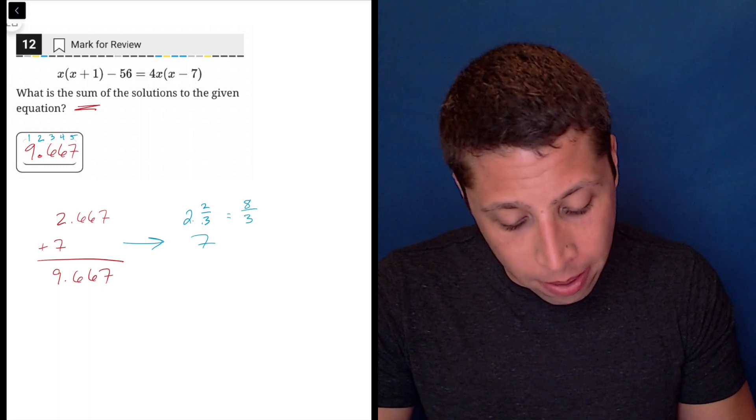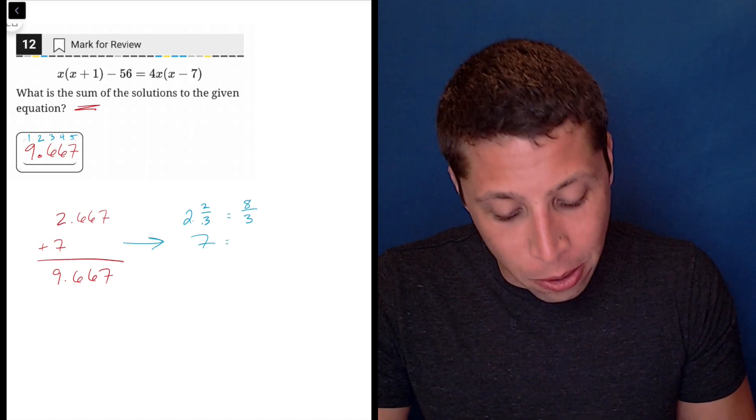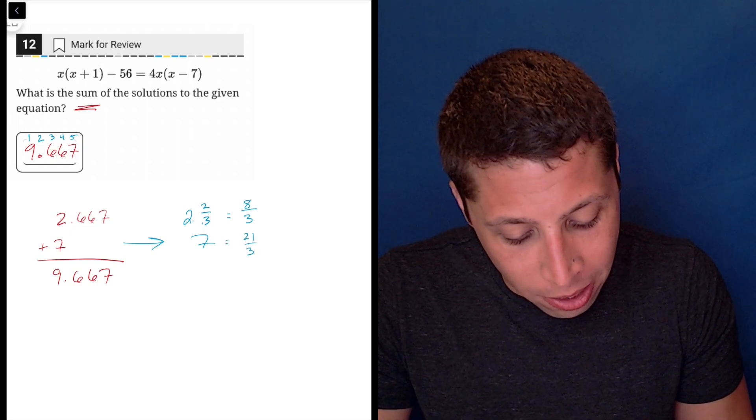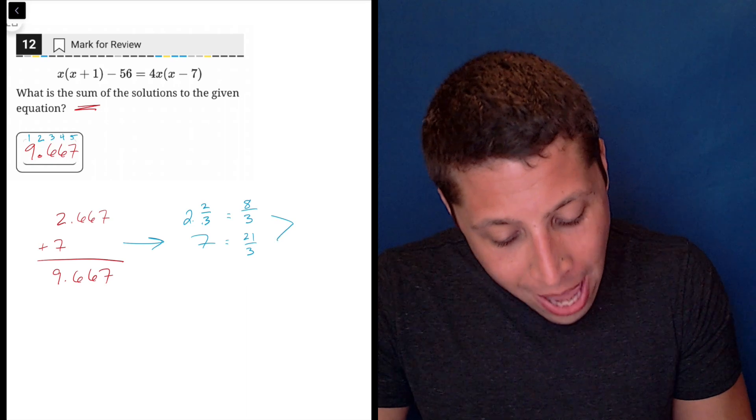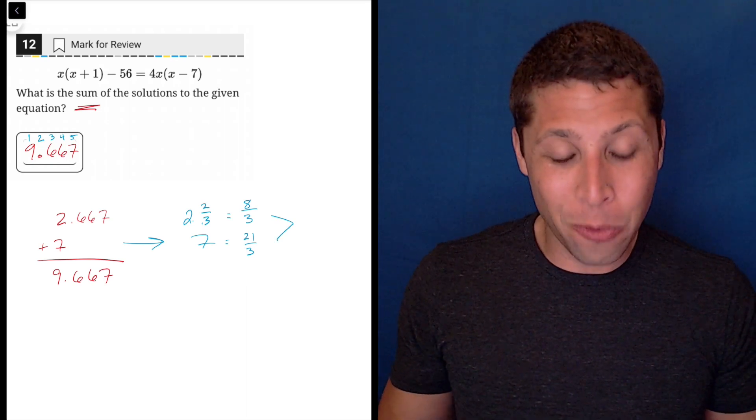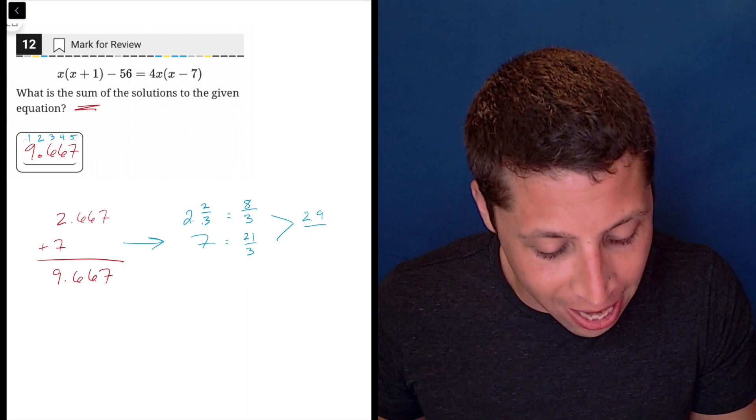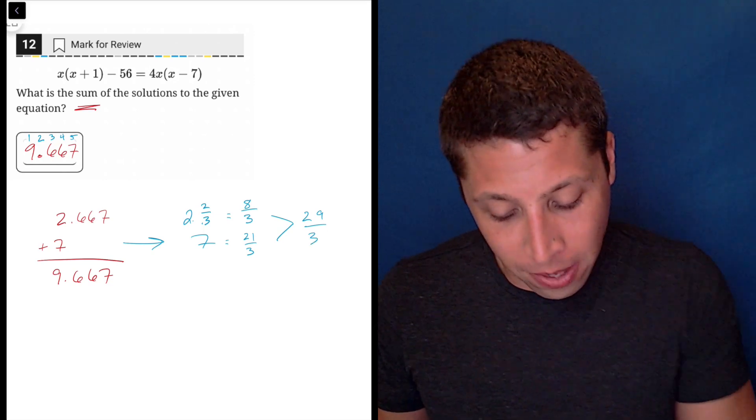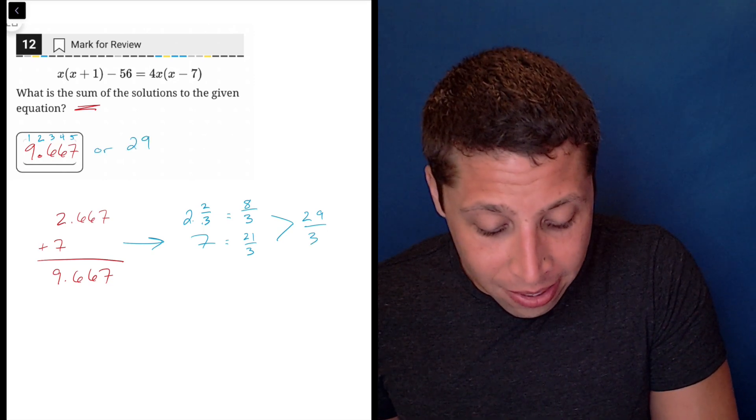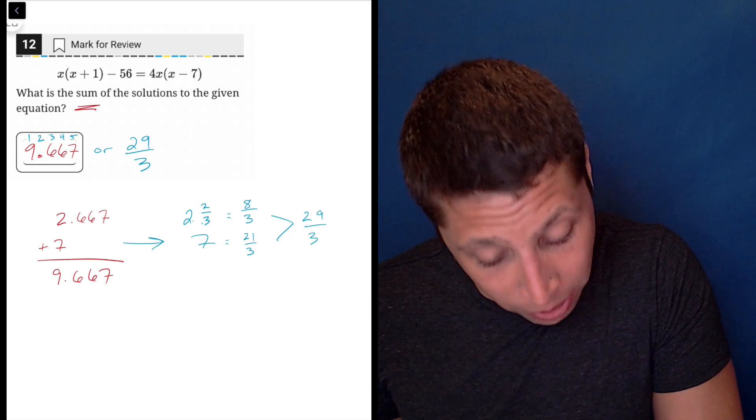And then I'm going to do, okay, seven would be 21 thirds. So eight thirds and 21 thirds, I don't need the calculator, is 29 thirds. So that's something else you could enter here, 29 thirds.